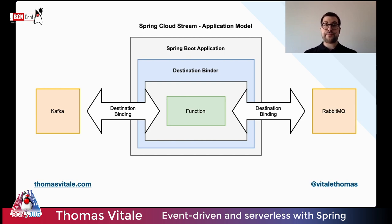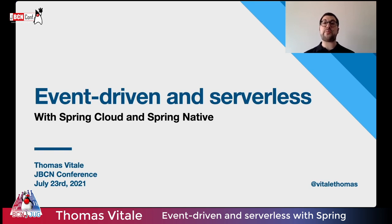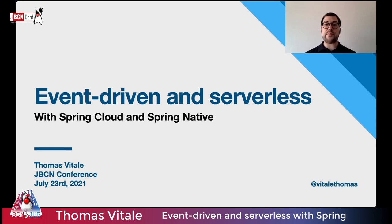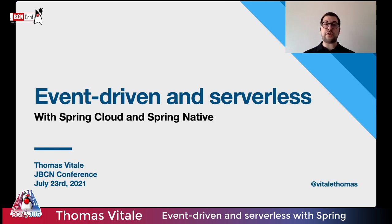In conclusion, we've seen how to build event-driven and serverless applications with Spring Boot. We started with Spring Native, which lets us build applications with instant startup time and reduced memory consumption. Next, we looked at Spring Cloud Function, which lets us implement business logic as functions, compose them into a data pipeline, transparently convert types, and expose them as HTTP endpoints. Finally, Spring Cloud Stream, building on Spring Cloud Function, lets you bind your functions to external event brokers like RabbitMQ and Kafka — all without changing anything in your code. Thanks for listening! Feel free to reach out on Twitter or LinkedIn.